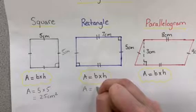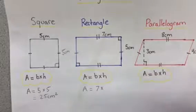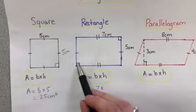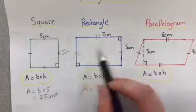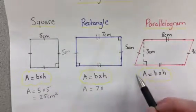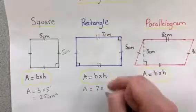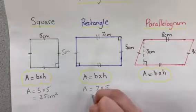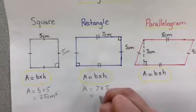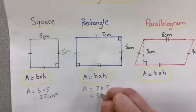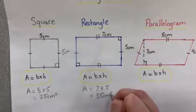A equals 7 times our height. Again, height has to be 90 degrees from the base to the top. Either of these two side lengths would be our height, which in this case is 5. So 7 times 5 gives us 35 centimeters squared.